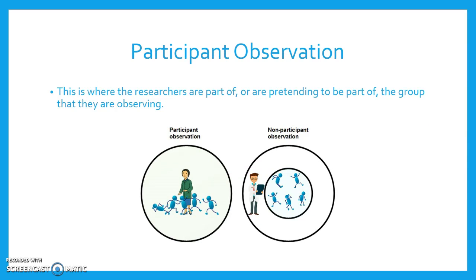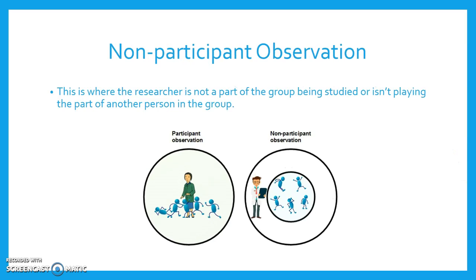Participant observation. This is where the researchers are part of or are pretending to be part of the group they are observing. Non-participant observation. This is where the researcher is not part of the group being studied or isn't playing the part of another person in the group.